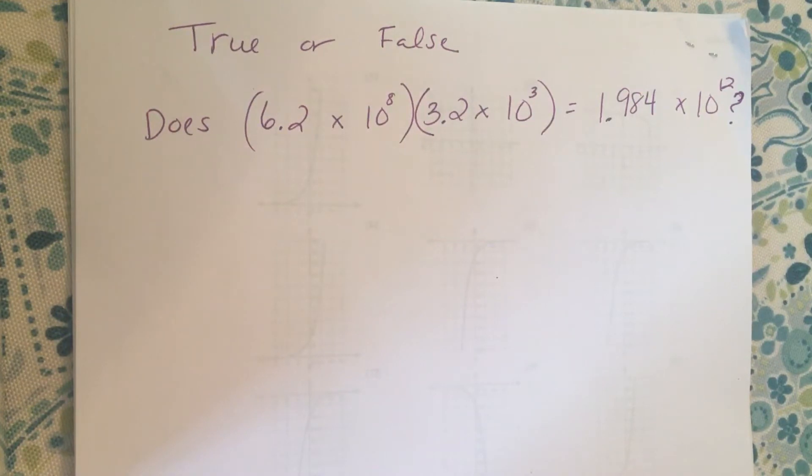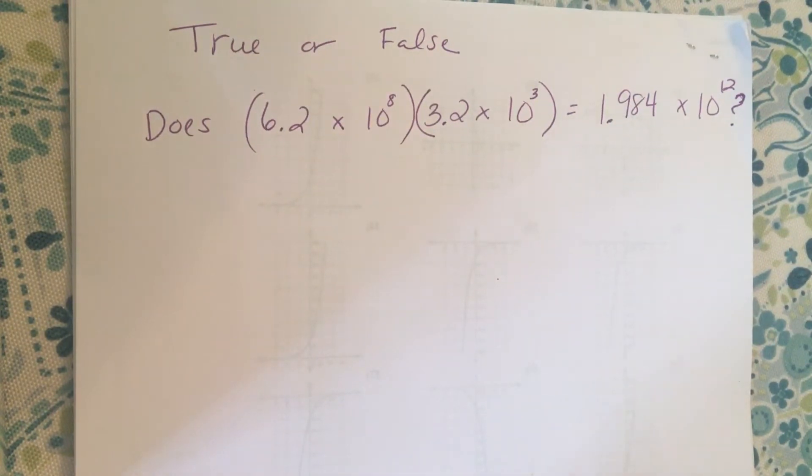Asking for number nine to be the video this week. So this is the question for number nine, and it says: True or false, does (6.2 × 10⁸)(3.2 × 10³) equal 1.984 × 10¹²?